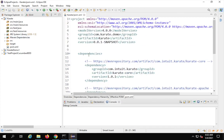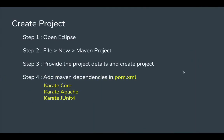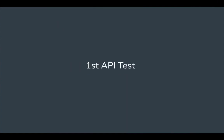Everything looks good. We have completed step four — adding all the Maven dependencies — and step five, saving the project, which gives us the Maven Dependencies folder. With this we have completed our project setup and we are ready to create our first API test. That is exactly what we will see in the next session. I hope this was useful — thank you for watching and never stop learning.